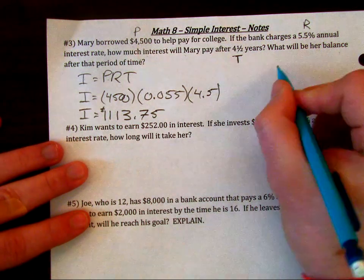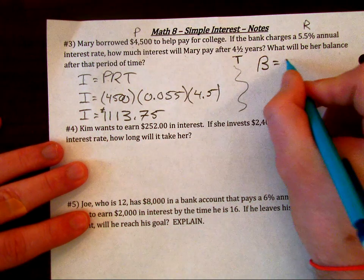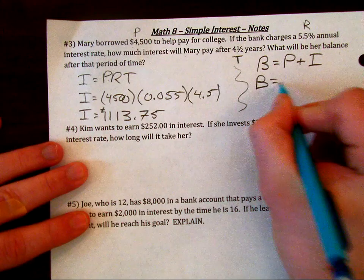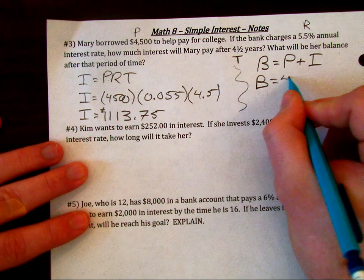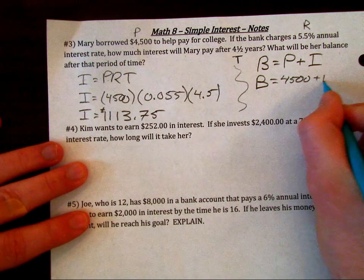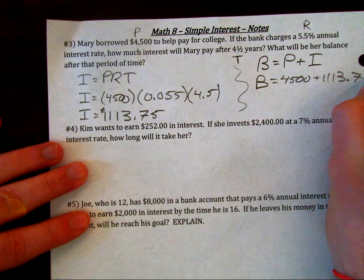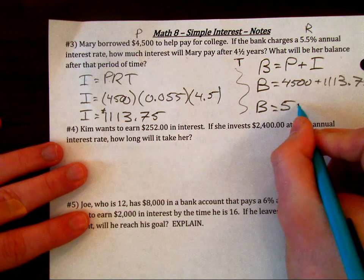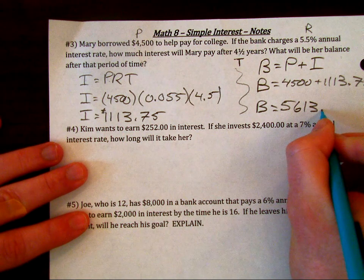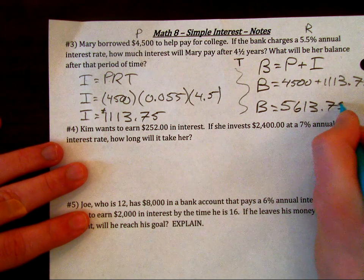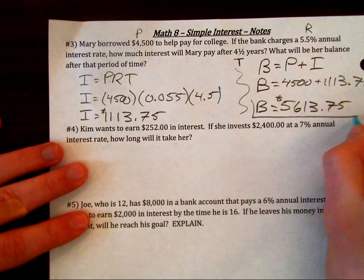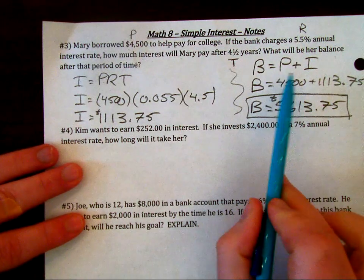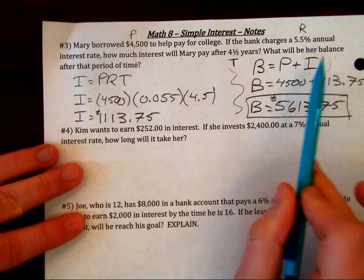For our balance, the balance is equal to the principal plus the interest. Plug in the values that you found: $4,500 plus the interest $1,113.75. Add those two together, and you get $5,613.75. At the end of 4.5 years, this is her balance that she will owe. If you're trying to find that balance, you must find that interest first.